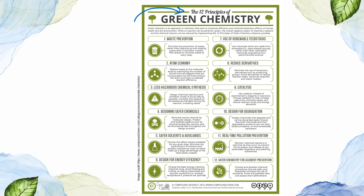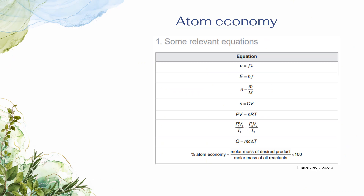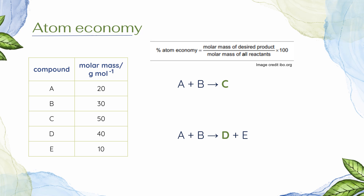When you start planning your scientific investigation — your IA for chemistry — try to incorporate as many of these as possible. Today though, we're going to focus on atom economy. The formula for atom economy is given to us in section one of the data booklet. The relevant equation is: percent atom economy equals the molar mass of the desired product divided by the molar masses of all of the reactants added up together, times 100 to turn it into a percent.